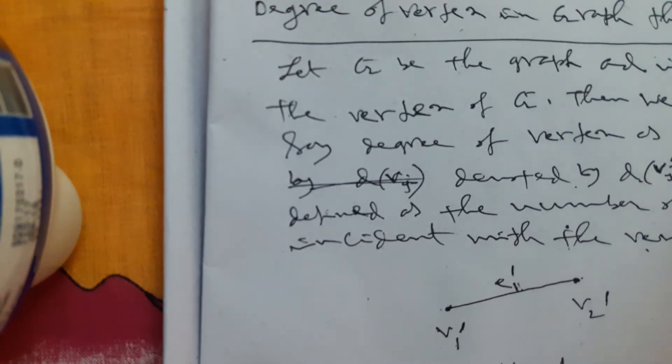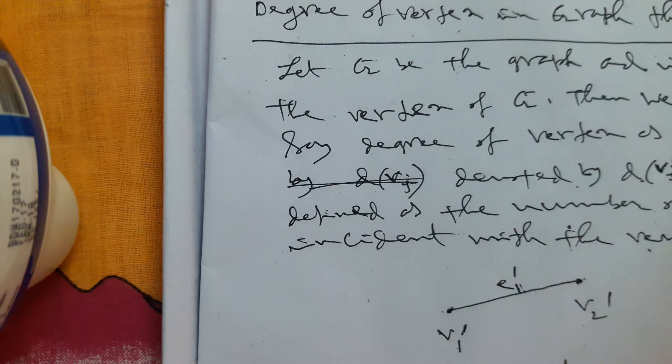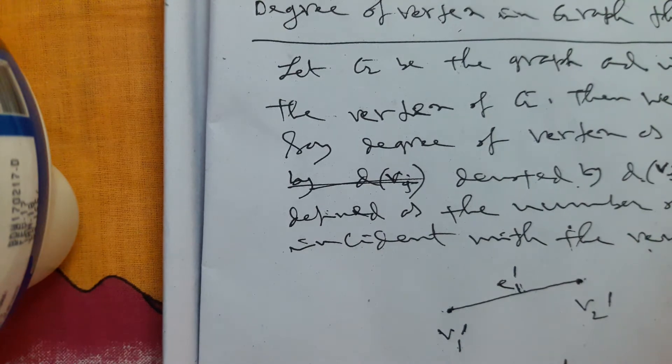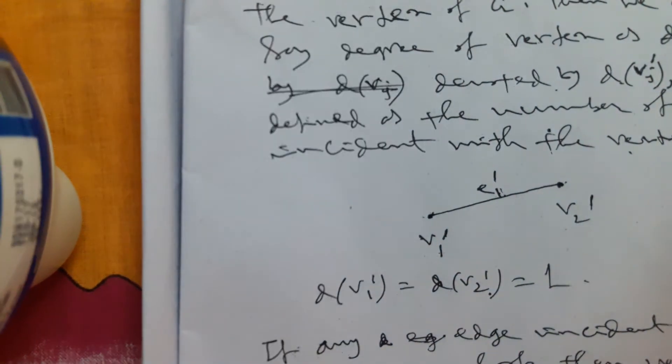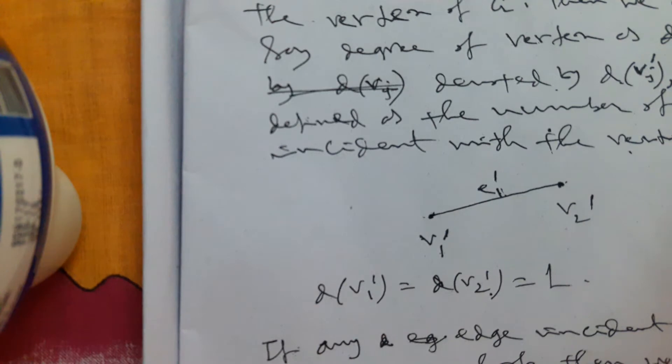If any edge incident with a vertex is a loop, then we assume the degree of that vertex is 2.